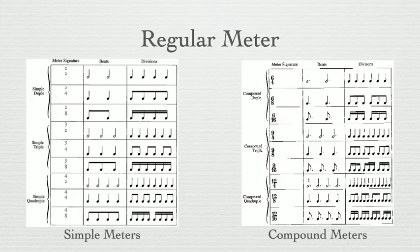Here's a reminder on that meter signature chart. We've got duple, triple, and quadruple in both simple and compound meters. Remember, simple has a subdivision of 2, and compound has a subdivision of 3. Simple has a top number that reflects the actual number of beats per measure, where compound has a top number that reflects the number of subdivisions per measure. Because remember, compound meter has a big beat, which is dotted. Let's dive into those practice examples now.